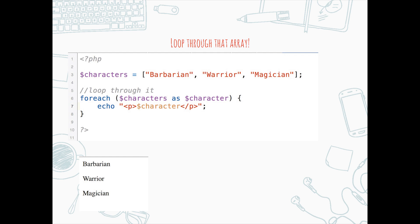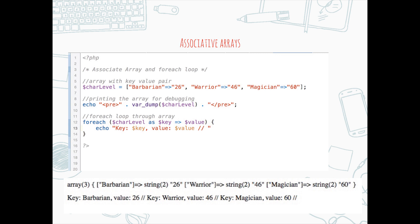Looping through the array: I use the for each function. Within the condition, I set 'characters' as the array of information and break it down to 'character', which is the individual data in the array. When you loop through character, you will get each item as displayed at the bottom. Here is an associative array, which is actually an ordered map — a map is a type that associates values to keys. The key can be an integer or a string, and the value can be anything. You use the for each loop to access the key and value data. The period used between the pre tag and the var_dump function is a concatenation, which helps to combine data together.